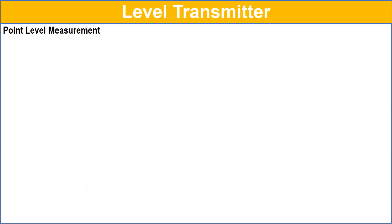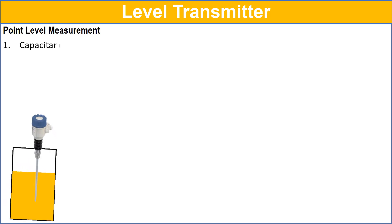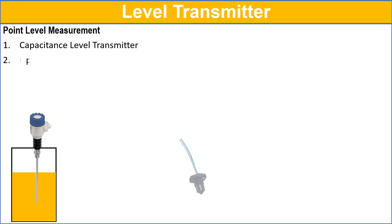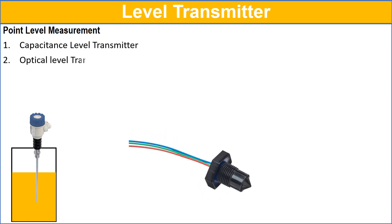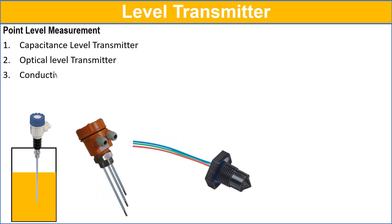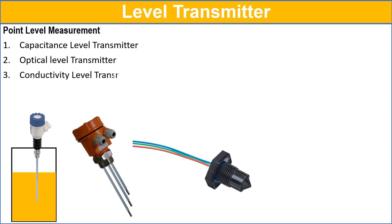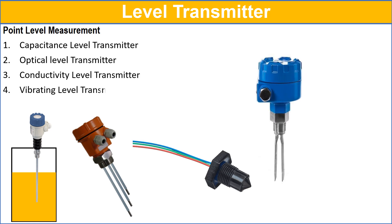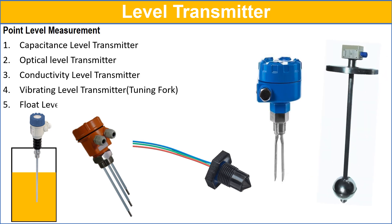The various types of point level measurement transmitters are: capacitance level transmitter, optical level transmitter, conductivity level transmitter, vibrating tuning fork level transmitter, and float level transmitters.